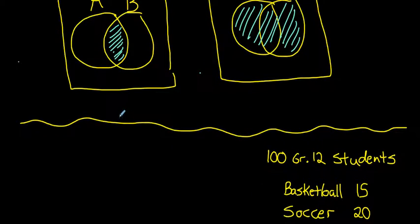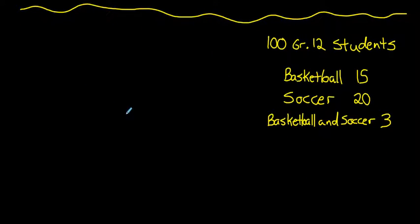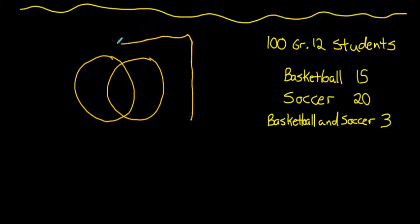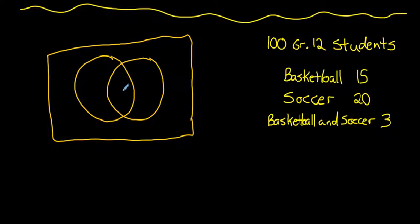Let's apply this to probability questions involving intersections and unions of different sets. For example, we have a sample of 100 grade 12 students. Of those, 15 are on the basketball team, 20 are on the soccer team, and 3 students are on both. We can represent this using a Venn diagram, with three students in the intersection of basketball and soccer.